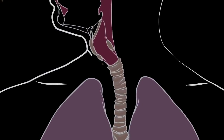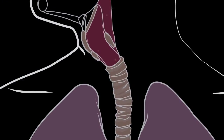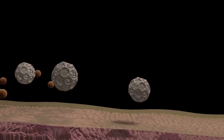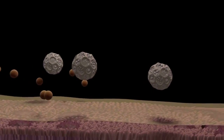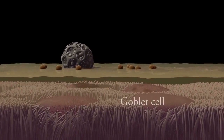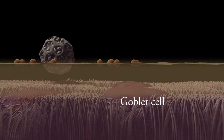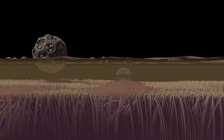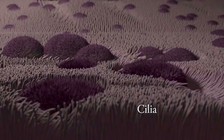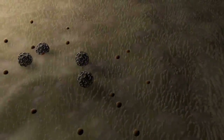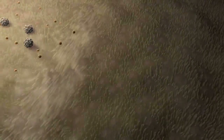The air we breathe contains foreign matter such as dust, bacteria, and pollen. Cilia as well as goblet cells are found in the lining of the respiratory tract — the respiratory epithelium. Goblet cells secrete viscous mucus that traps foreign material, and the wave-like action of the cilia mobilizes the mucus layer, removing that foreign matter and preventing it from entering the lungs.